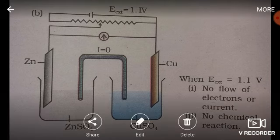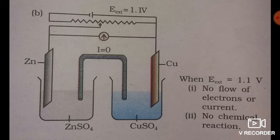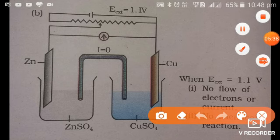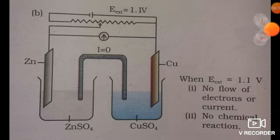Here, in this case the potential difference developed in figure A causes electrons or electricity to flow. But if we apply an opposite external force — since the flow of electrons is taking place from left to right — and we apply an external force equal to 1.1 volts, then there will be no flow of electrons due to the opposite force provided externally. This means current will be zero. If the external force applied to a cell with voltage 1.1 volts is also equal to 1.1 volts, there is no flow of electrons in either direction and no conduction of electricity.